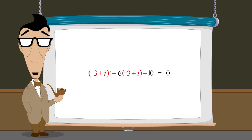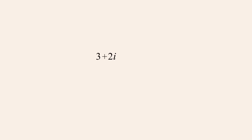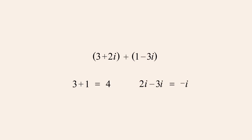In this lecture, we will see how to perform the operations of addition and subtraction. To add two complex numbers, for example 3 plus 2i and 1 minus 3i, we add their real parts and add their imaginary parts, giving us the sum 4 minus i.